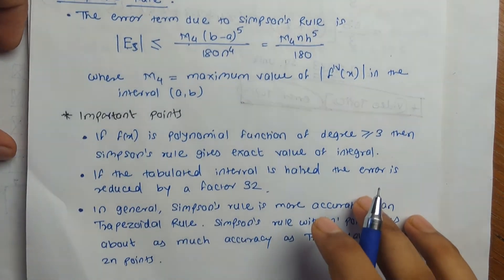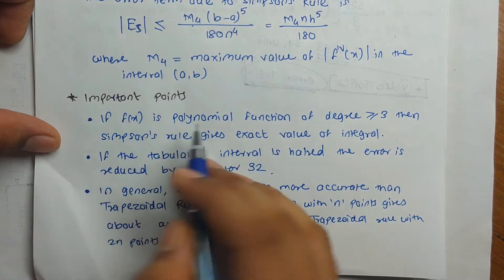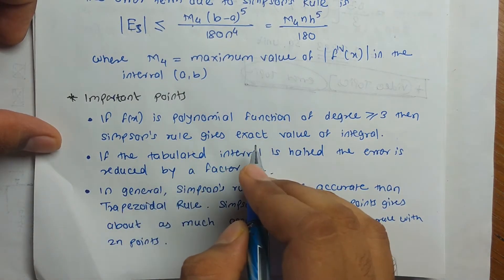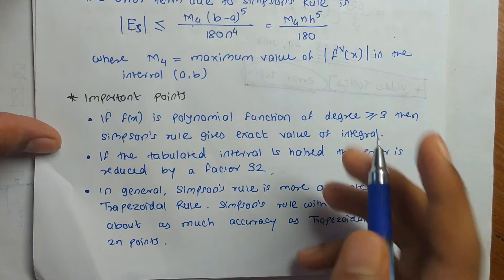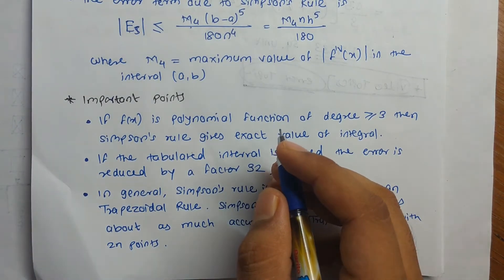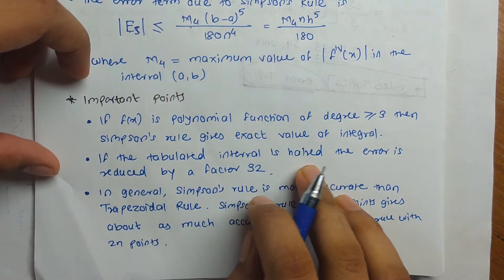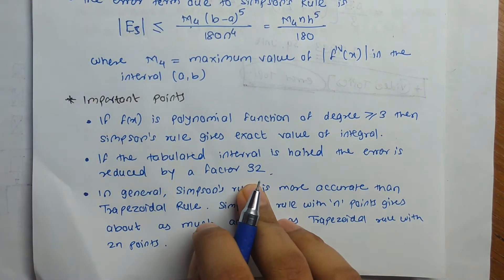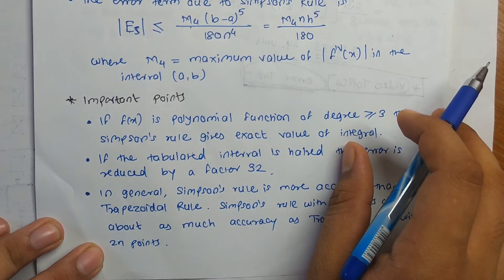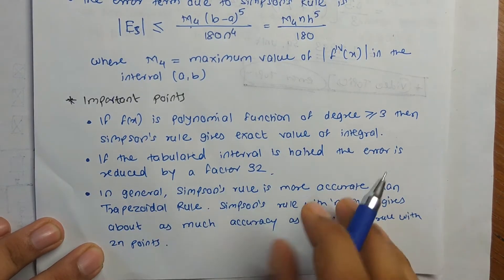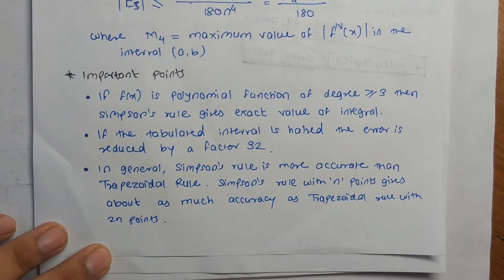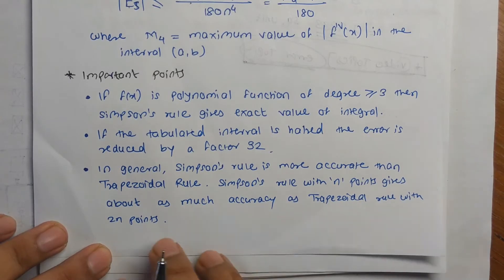Important points for Simpson's rule: If f(x) is a polynomial function of degree less than or equal to 3, Simpson's rule gives the exact value — so degree 0, 1, 2, or 3 all give exact answers. If the tabular interval is halved, the error is reduced by a factor of 32. In general, Simpson's rule is more accurate than the trapezoidal rule because more points are used.